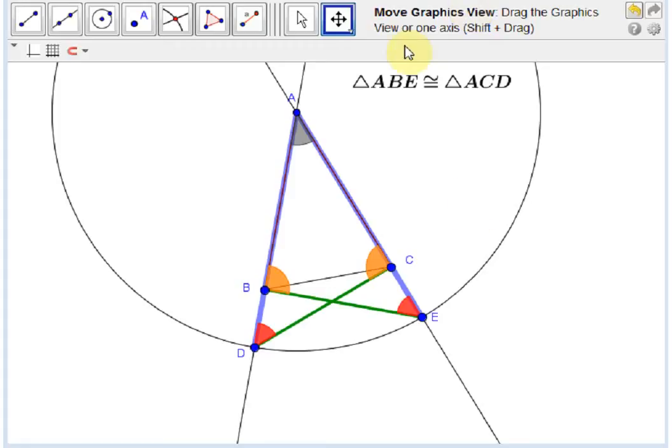Next, we can observe that we actually have two more congruent triangles. In particular, triangle BDC and triangle CEB are also congruent by side-angle-side. Side BD is equal to side CE, angle BDC is equal to angle CEB, and side DC is equal to side EB.